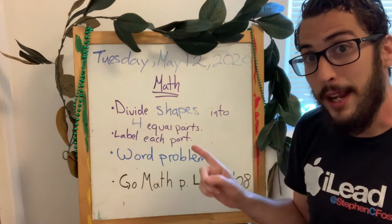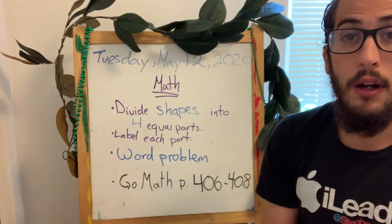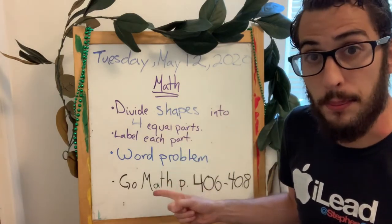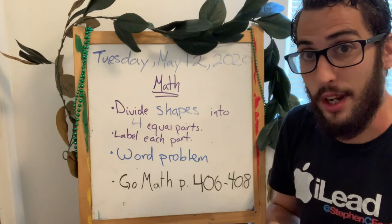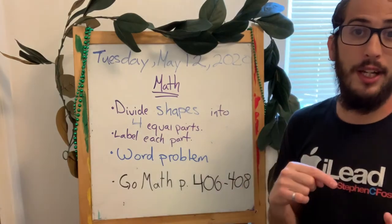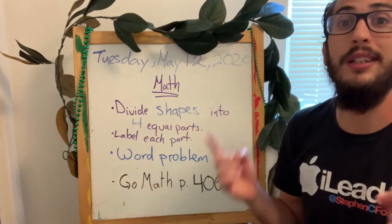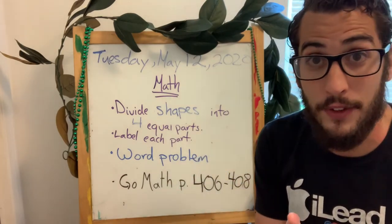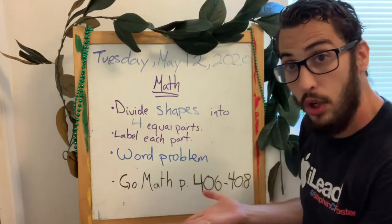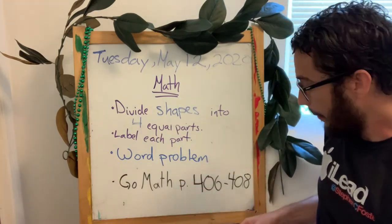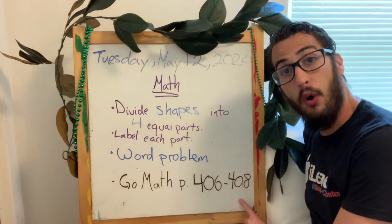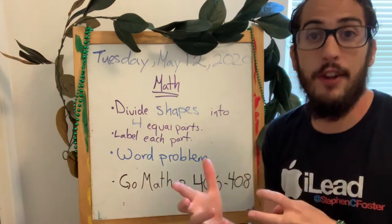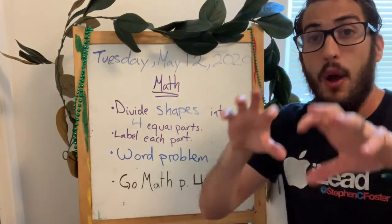And then you're going to label each part of the four equal parts shape. The last part, we're doing word problems, and those word problems are not the same as yesterday. Yesterday we did multiplication word problems. Today, we're going to do, again, reviewing division word problems. And to practice more about division, I want you guys to go to GoMath to these pages: page 406 and page 408. Those pages will help you understand what is division.